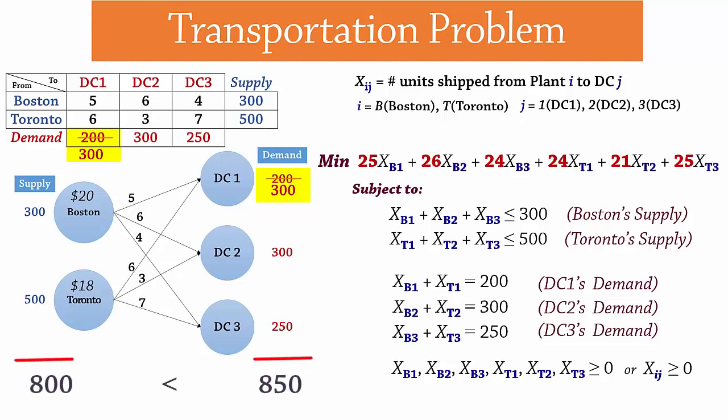Let's look at 2 ways to handle this. Since demand now exceeds supply by 50 units, one approach is to add a dummy plant and assign it a supply of 50 units. Note that these 50 units do not exist. So their cost per unit is 0 and their shipping cost is also 0 since they are not going to be shipped at all.